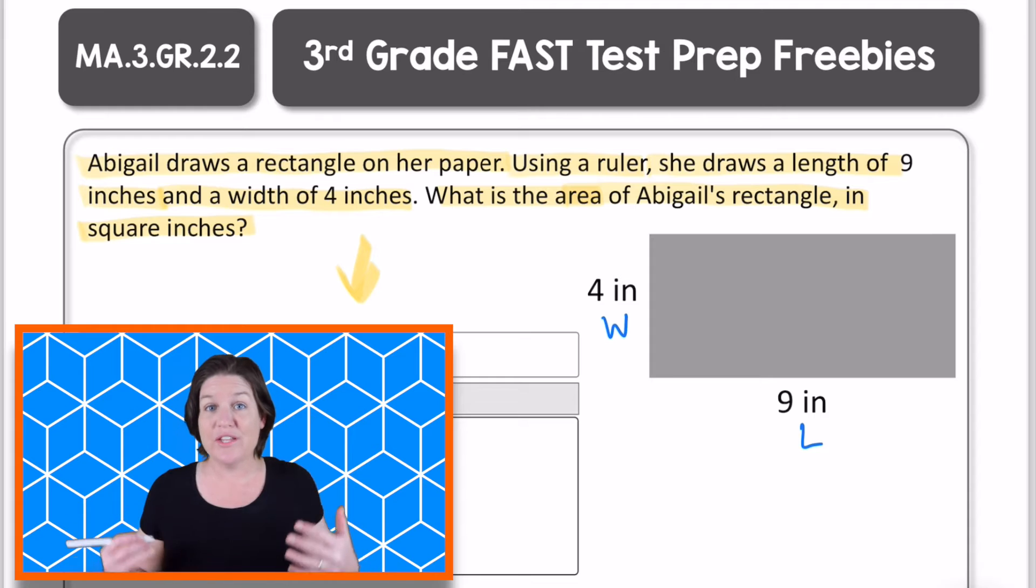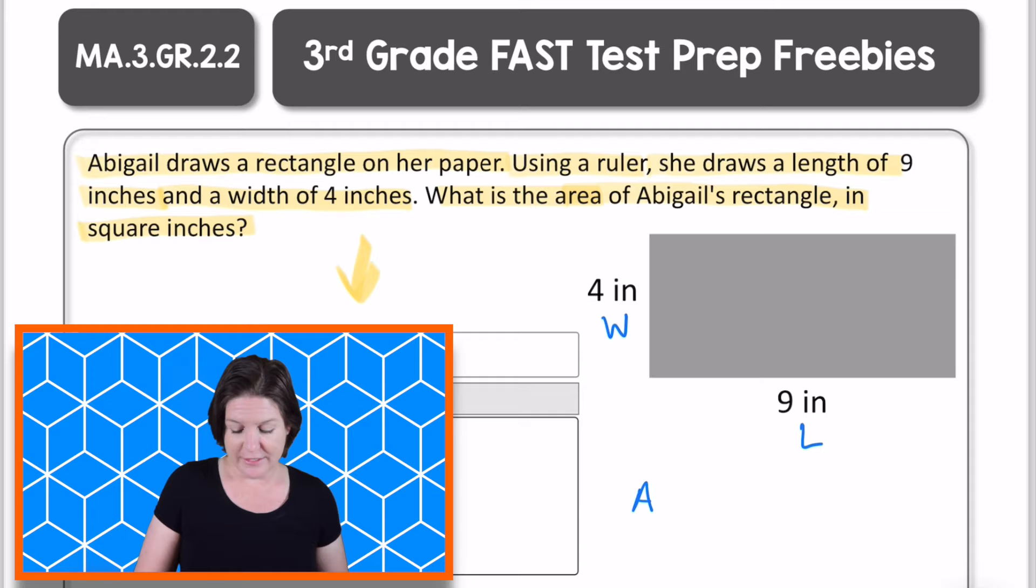And we should also know that we can use the formula to find the area. The formula is the area equals the length times the width, A = L × W.